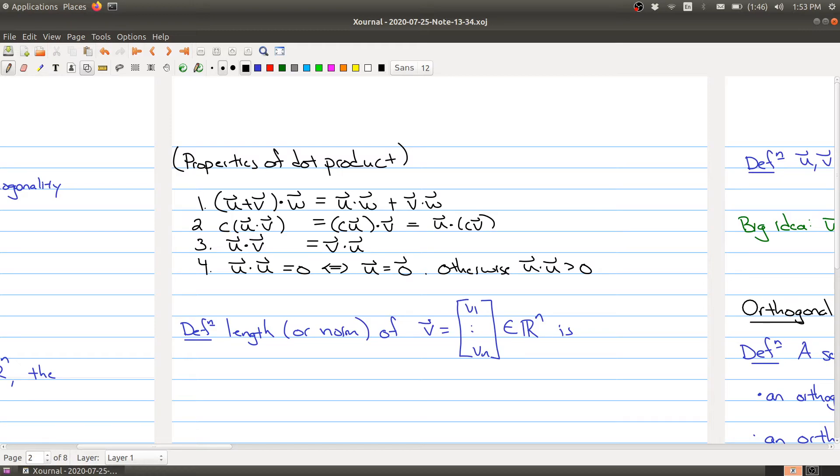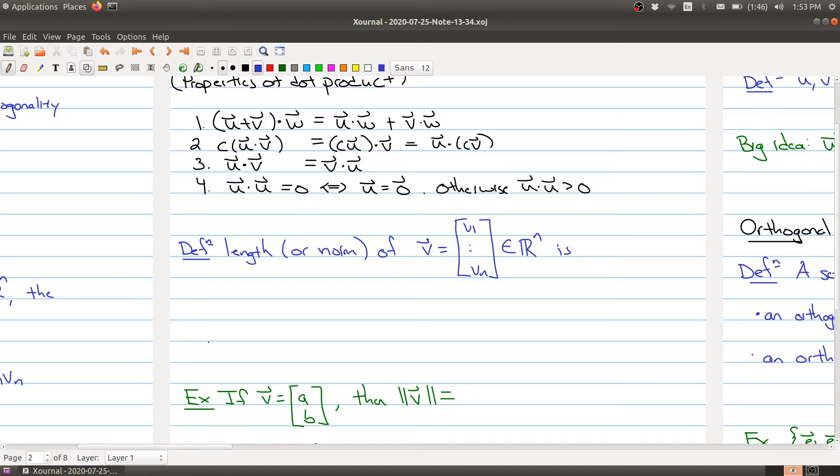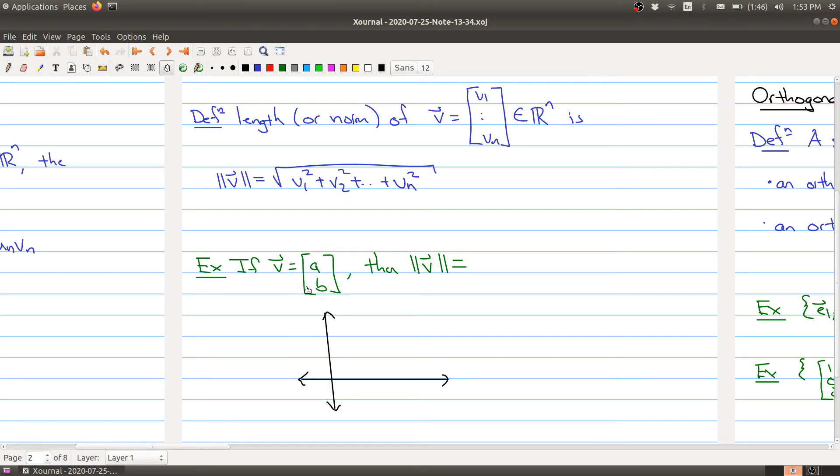The other property that we need is the notion of a length or norm of a vector. The length of a vector v is defined as follows. We use this notation, two absolute value signs here on either side. And this is going to be defined to be the first coordinate squared, the second coordinate squared, all the way up to the last coordinate squared, and then you take the square root of the resulting number. Now, it's sometimes called the length of a vector. To understand why this is a good name, let's look at a vector in R². So if we take the vector v in R² of the form (a, b), then the formula tells me that the length of this vector is the square root of a squared plus b squared.